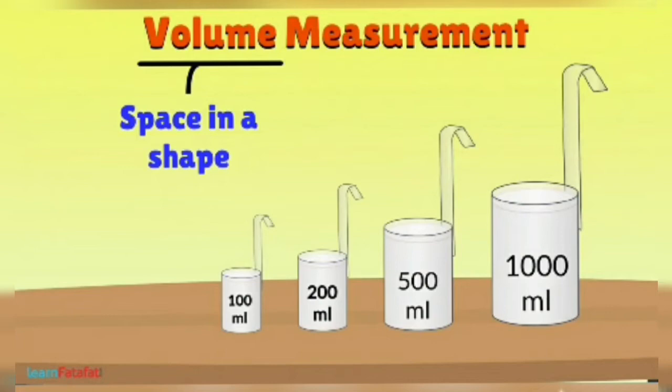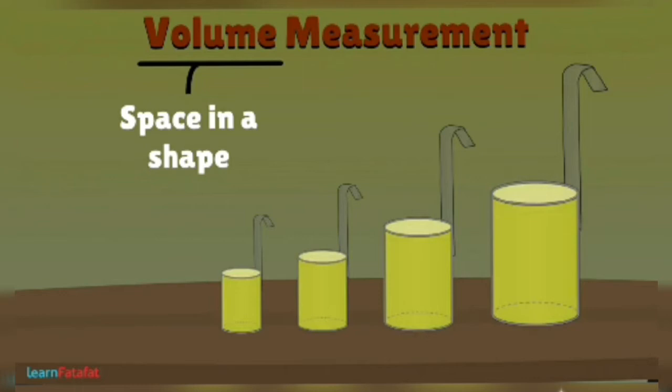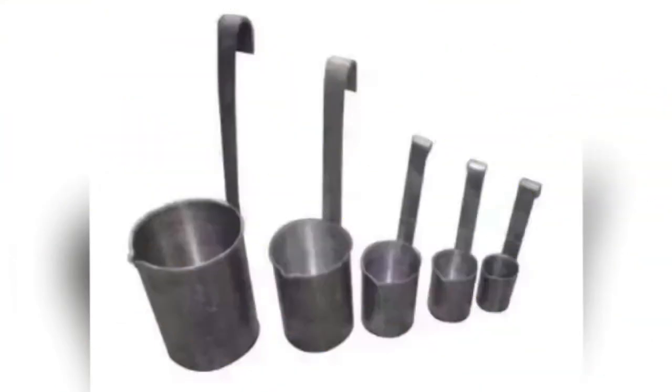We buy these things by measuring how much space they occupy. That is, the space occupied in a shape, whether container, bottle, etc. The amount, the space which they occupy tells you the volume.